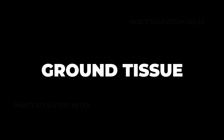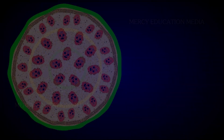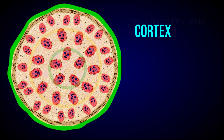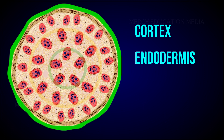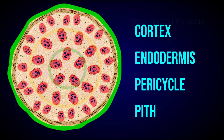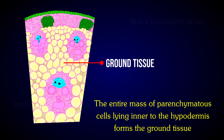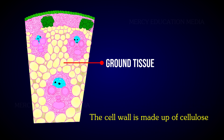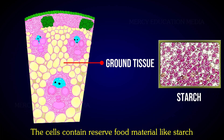What are ground tissues? There is no distinction into cortex, endodermis, pericycle, and pith. The entire mass of parenchymatous cells lying inner to the hypodermis forms the ground tissue. The cell wall is made up of cellulose, and the cells contain reserved food materials like starch.